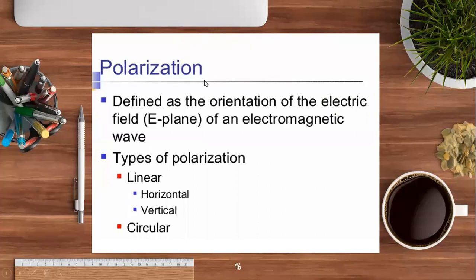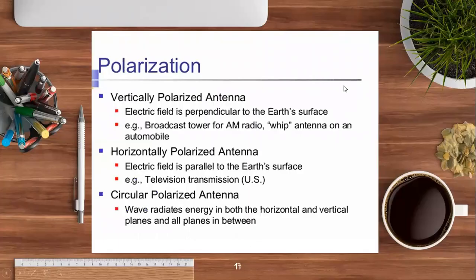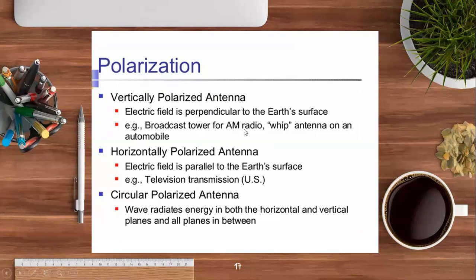Gain is one of the important parameters in antenna design — it is the power output in a particular direction compared to that produced in any direction by an isotropic antenna. Effective area is related to the physical size and shape of the antenna — how long, wide, and tall it is — and from this we can easily find the effective area. Polarization refers to the orientation of the electric field (E-plane). Types include linear (horizontal and vertical) and circular. AM radio broadcast towers fall under vertical polarized antennas.